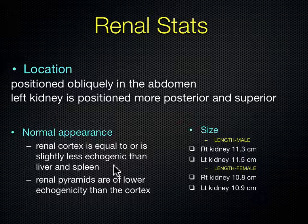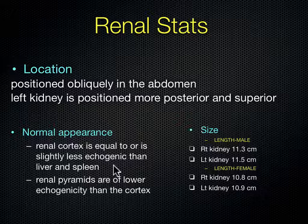Kidney sizes differ slightly between males and females — kidneys are about half a centimeter bigger in males. The right kidney is actually smaller than the left kidney. In males, the right kidney is about 11.3 centimeters and the left is 11.5 centimeters. The same pattern holds in females, with the left side slightly bigger.